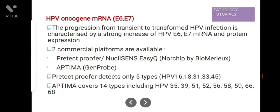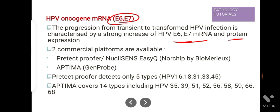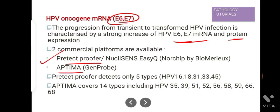Then comes HPV oncogene mRNA E6/E7. As we read in previous slides, E6 and E7 are oncogenic and have a role in cancer. When there is HPV infection, there are increased numbers of HPV E6 and E7 mRNA and protein expression. They are detected by two commercial platforms: first is PreTect Proofer, and second is Aptima. PreTect Proofer detects five types of HPV — 16, 18, 31, 33, and 45 — and Aptima covers 14 types of HPV.